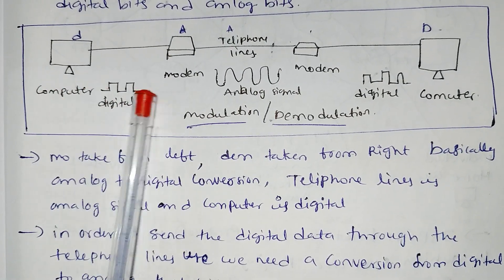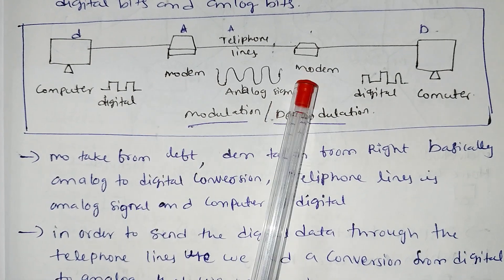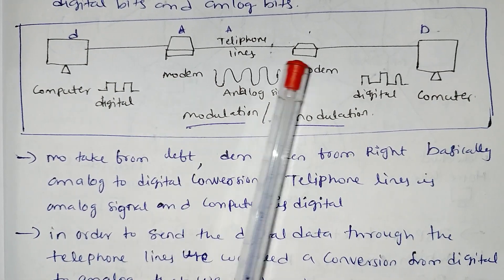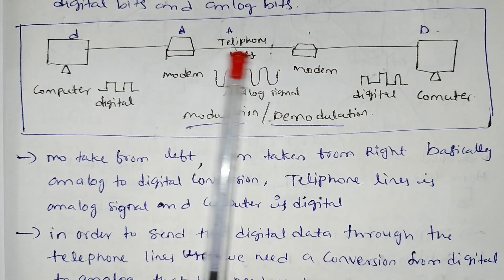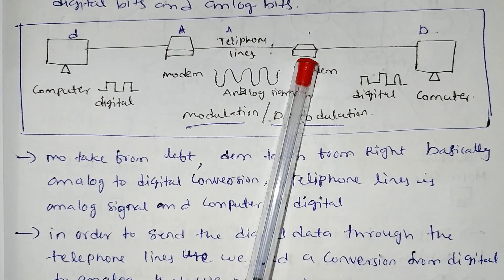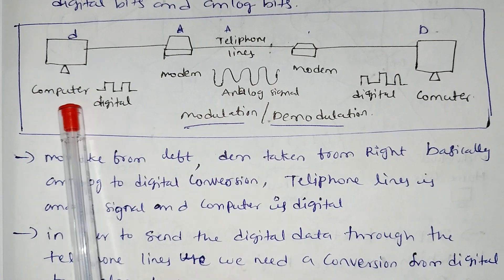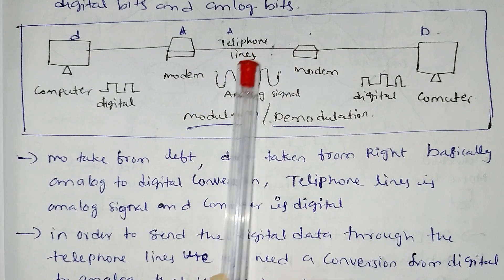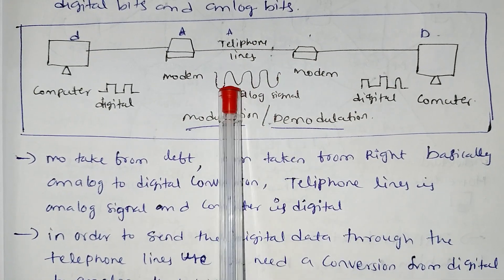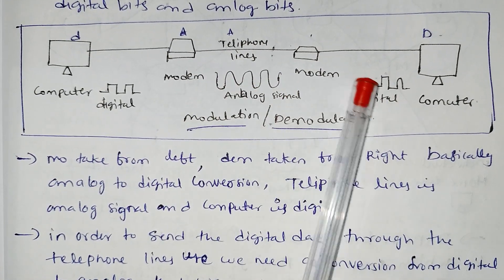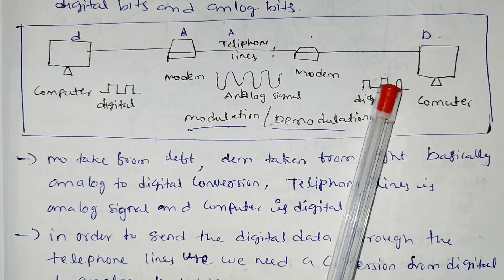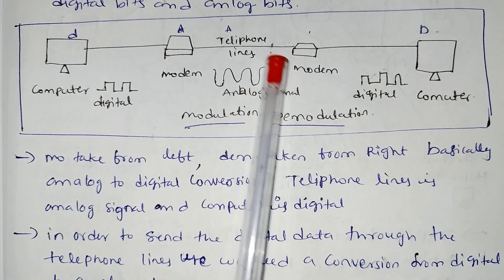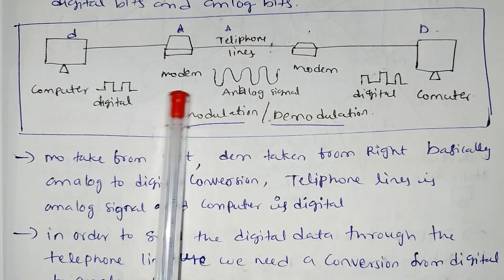Here is modulation — computer and digital signals. If you have a modem, we use telephone lines. We use the computer to modem with digital signals. The modem and telephone lines use analog signals.